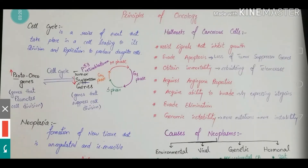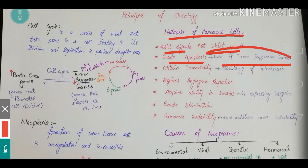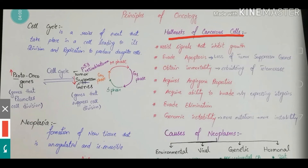The hallmarks of a cancerous cell include: it will resist signals that inhibit its growth; it will evade apoptosis through the loss of the tumor suppressor gene — the tumor suppressor gene is responsible for killing the cell when it shifts towards carcinoma. The carcinoma cell will also obtain immortality, and this is by means of rebuilding telomerase. Telomerase is present at the end of a chromosome.